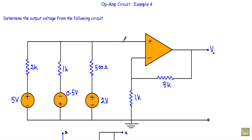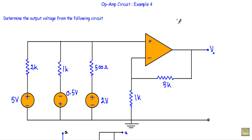In this video I will show you another example of an operational amplifier circuit. This is the fourth example out of eight. We need to determine the output voltage from the following circuit. In this circuit, the output terminal is connected with the inverting terminal, so this circuit is in negative feedback.